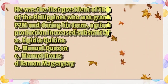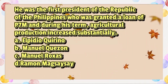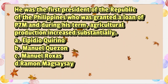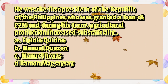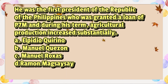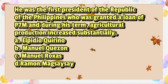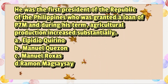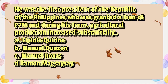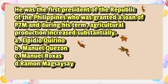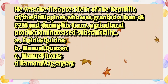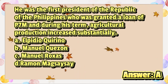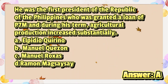He was the first president of the Republic of the Philippines who was granted a loan of 7 million pesos, and during his term agricultural production increased substantially. A. Elpidio Quirino. B. Manuel Quezon. C. Manuel Rojas. D. Ramon Magsaysay. The answer is letter A.